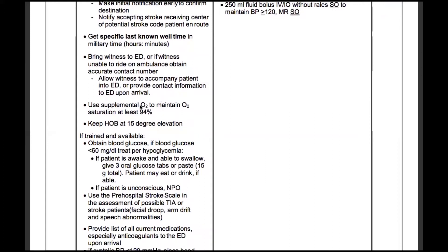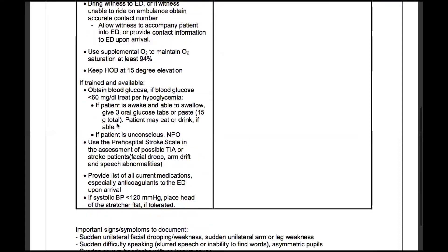Use supplemental O2 to maintain an O2 saturation of at least 94%. Keep the head of the bed at a 15 degree elevation. If trained and available, obtain a blood glucose. If the blood glucose is less than 60 milligrams per deciliter, we treat for our hypoglycemia protocol.